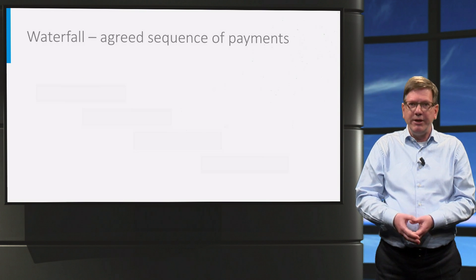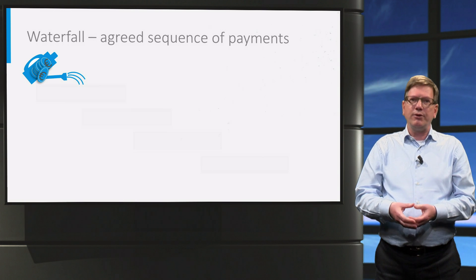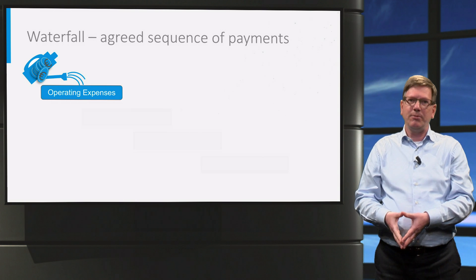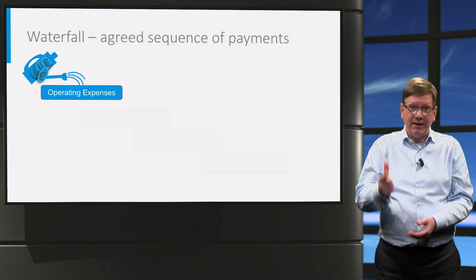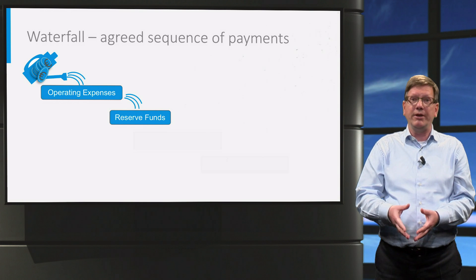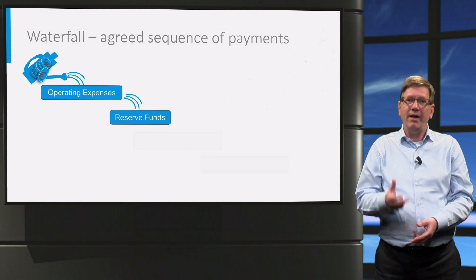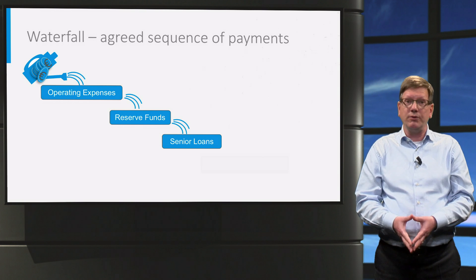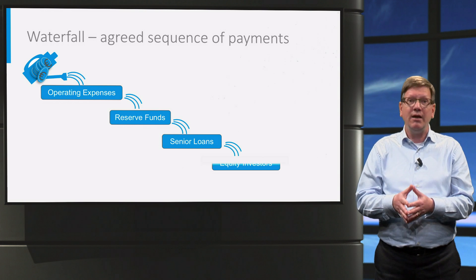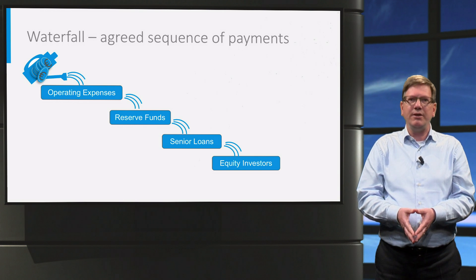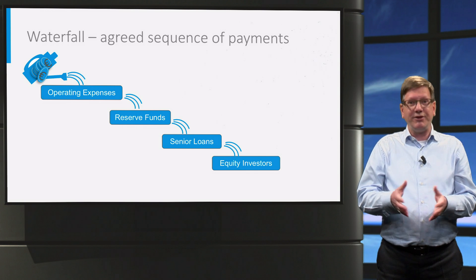There is also an agreed sequence that all payments must follow — the so-called waterfall or cascade. With all the revenues that come in, first all the operating expenses must be settled, because all parties want the project to continue. Second, a reserve fund is created for future operational costs, ensuring operations can continue even if revenues are at some stage interrupted. Then, the interest and loan repayments on the project loans are settled — lenders have priority rights over equity investors. Lastly, whatever funds are left after all these steps may be distributed to the equity investors as dividends. They are last in line, but if all has gone according to plan, they will still earn a healthy return.